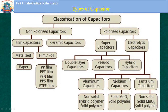Electrolytic capacitors are generally formed of aluminum capacitors, niobium capacitors, and tantalum capacitors. Supercapacitors have structural differences which include double layer capacitors, pseudocapacitors, and hybrid capacitors.